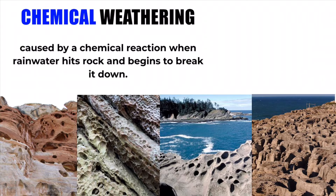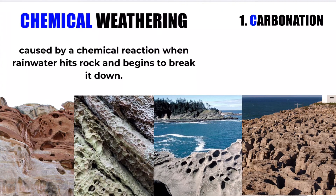Now there are three main types of chemical weathering. The first type is known as carbonation weathering, and this is when we have carbonic acid in rainwater reacting with the calcium carbonate in limestone specifically to form calcium bicarbonate.